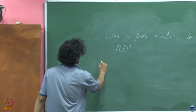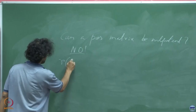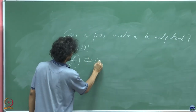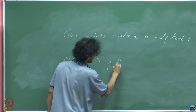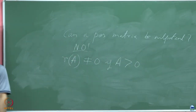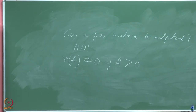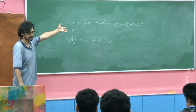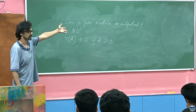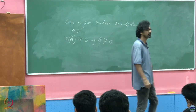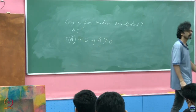Therefore, the spectral radius of A is not equal to zero if A is positive. The only way it could have been zero is if all its eigenvalues were zero, or if it were nilpotent, but it cannot be nilpotent as we have argued. So in general, a positive matrix must have a non-zero spectral radius.